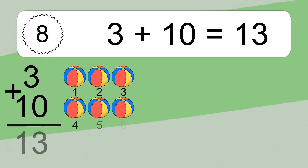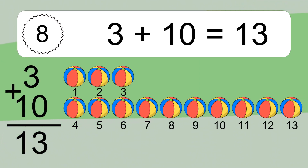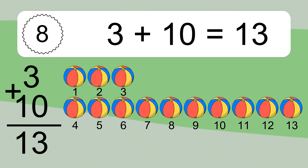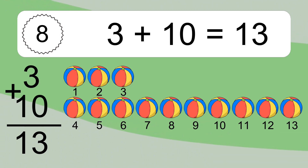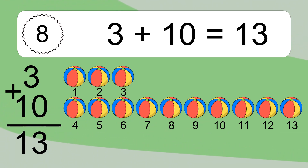3 plus 10 equals 13. Let's count it: 1, 2, 3, 4, 5, 6, 7, 8, 9, 10, 11, 12, 13.